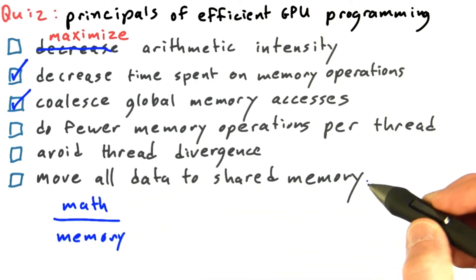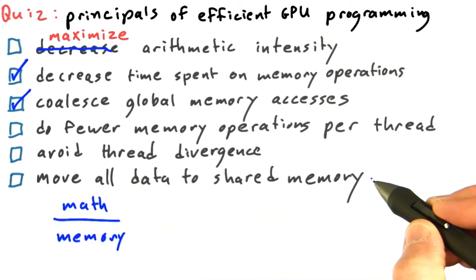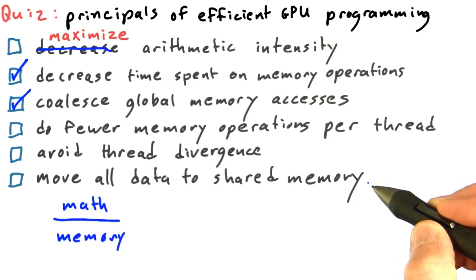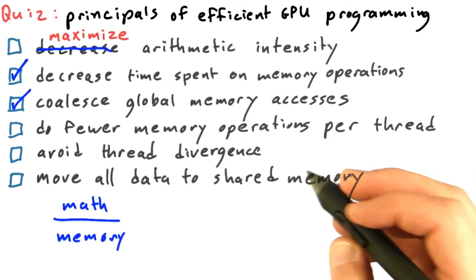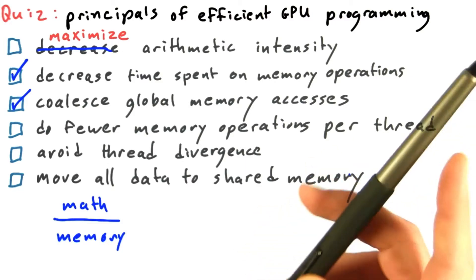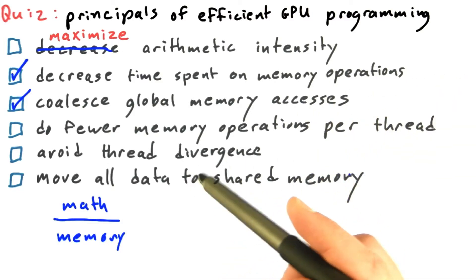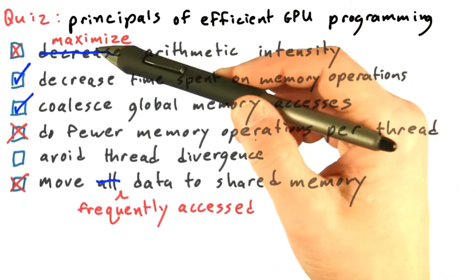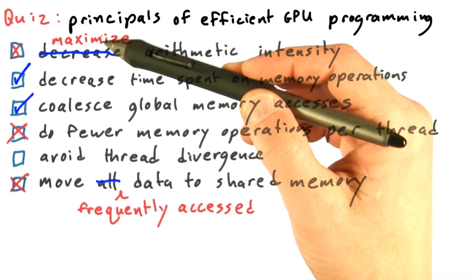By the same token, we don't necessarily want to move all data to shared memory, because that could be an unnecessary memory operation. What we really care about is moving frequently accessed data to shared memory. So these three are not correct.